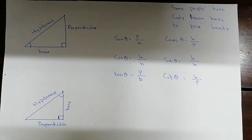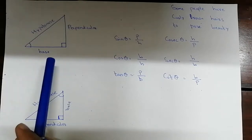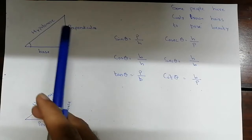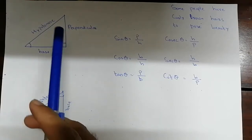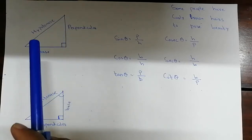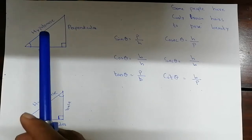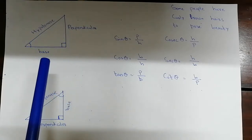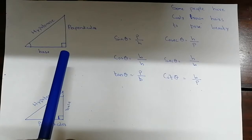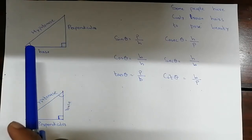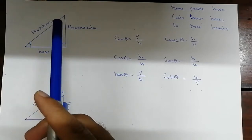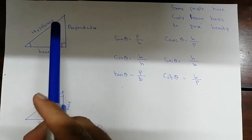Hello, welcome to the new video. Today we will learn about the trigonometric ratios. This is a right angle triangle because one of its angles is 90 degrees. First of all, we need to understand which side is the hypotenuse — the side opposite to the 90 degree angle is the hypotenuse, and it is the largest side in the right angle triangle.